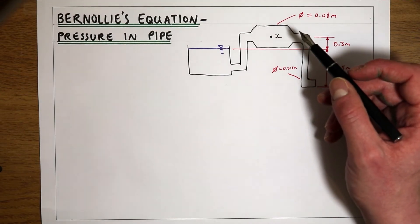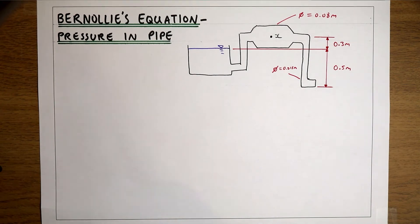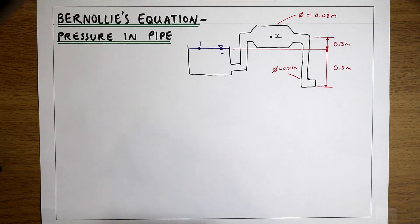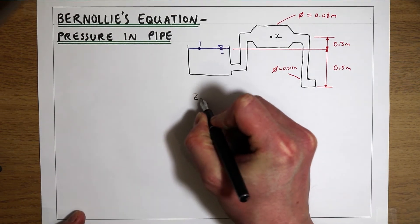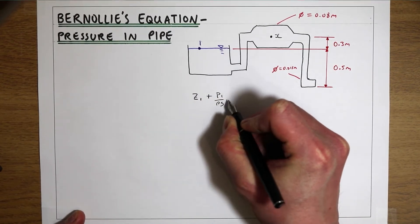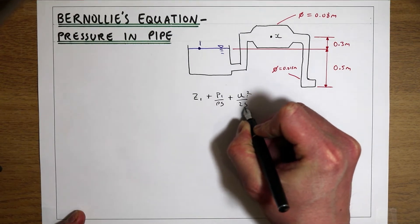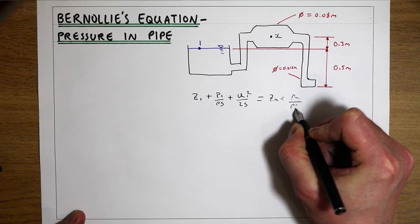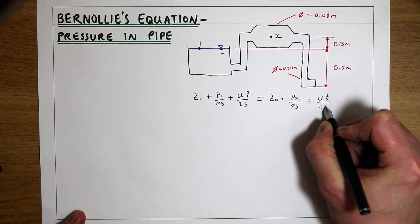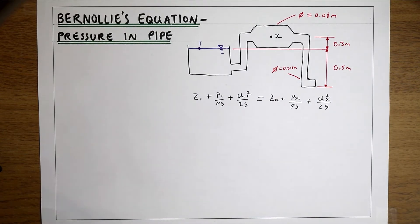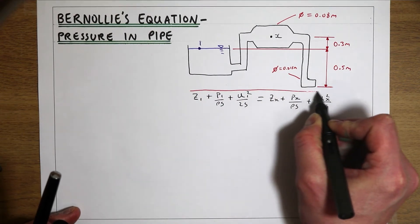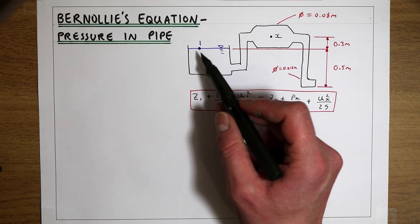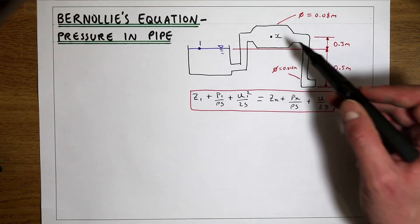We're going to set up Bernoulli's equation between point number one at the water surface of this tank and point X in the pipe where we want to find the pressure. So: Z1 + P1/ρg + U1²/2g = Zx + Px/ρg + Ux²/2g. This says that the elevation, pressure, and velocity at point 1 in terms of pressure heads are equal to those same terms at point X.